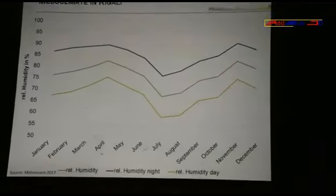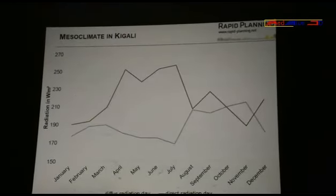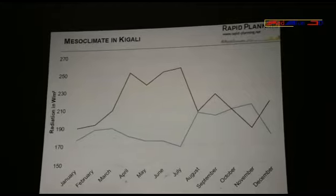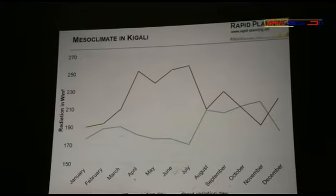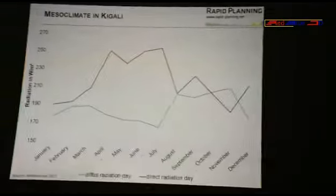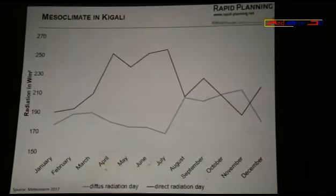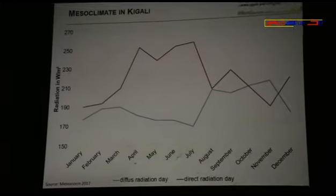Temperature is stable over the year, but humidity is changing. You have high humidity in the rainy season and low humidity in the dry season. For solar radiation, we have higher direct radiation in the dry season and higher diffuse radiation in the rainy season, because there are more clouds in the rainy season. The direct radiation always has more energy because it's coming directly from the sun.